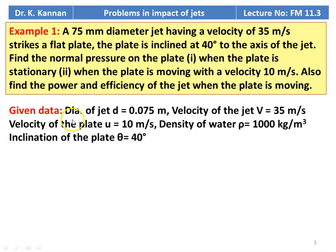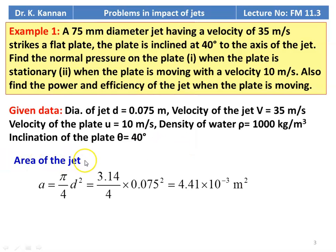Given: diameter of the jet D = 0.075 m, velocity of the jet V = 35 m/s, velocity of the plate U = 10 m/s, density of water = 1000 kg/m³, and inclination of the plate theta = 40 degrees. Area of the jet: A = (pi/4) × d² = 3.14/4 × 0.075² = 4.41 × 10⁻³ m².